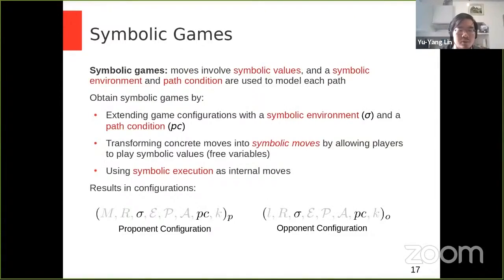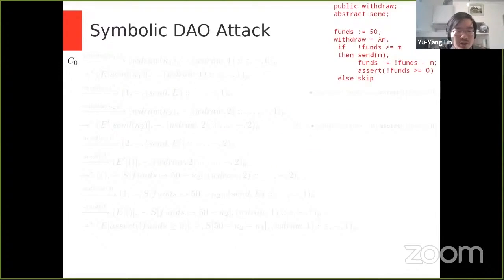So with this, we can now produce a symbolic execution game semantics for our libraries by allowing the presence of symbolic moves and extending the configurations with sigma and PC. So you can see the configurations are the same as before. At the bottom, we can see the proponent and opponent configurations. The only difference is the presence of sigma in place of a state S and the path condition in addition to the previous elements.